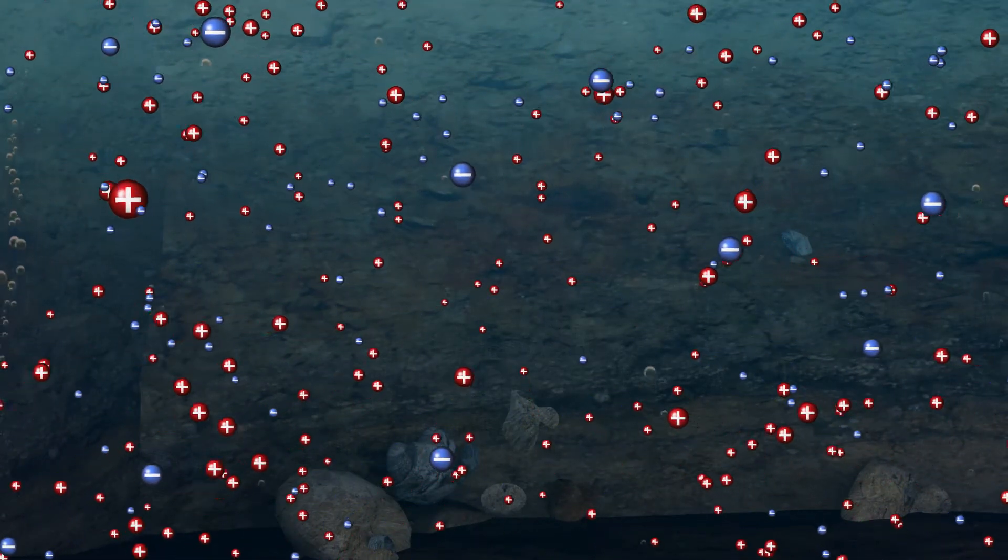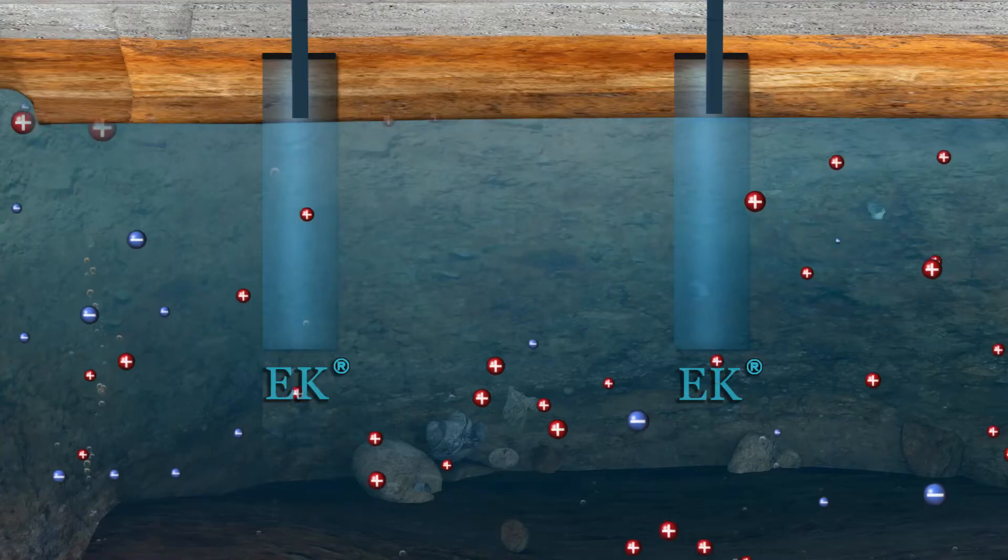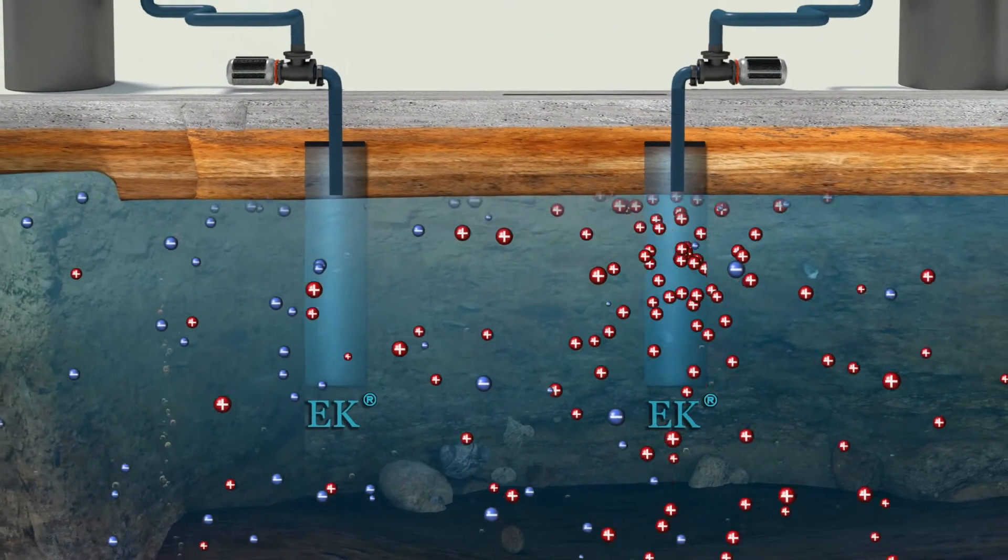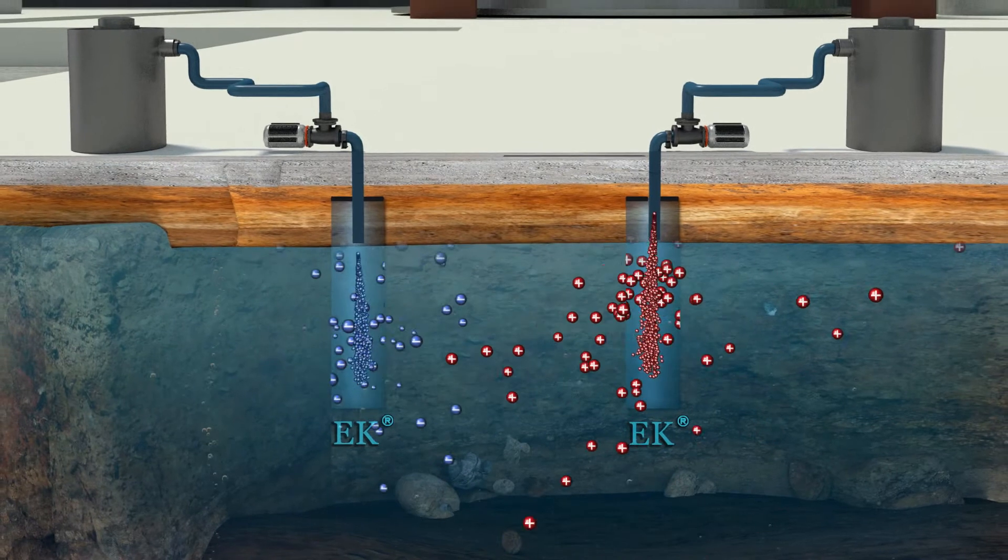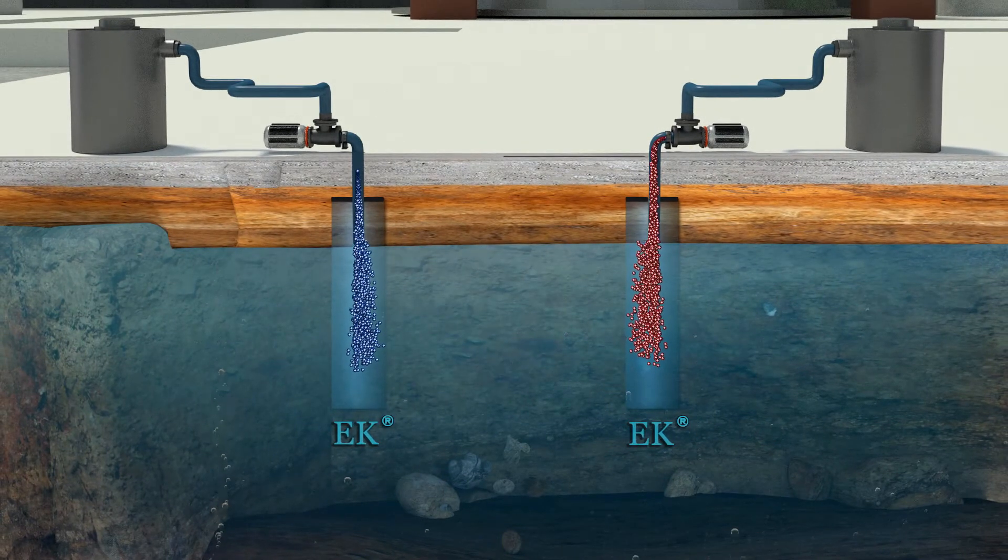Furthermore, electrokinetic remediation can perform successfully in different soil types, including low hydraulic permeability and clay-containing soils.